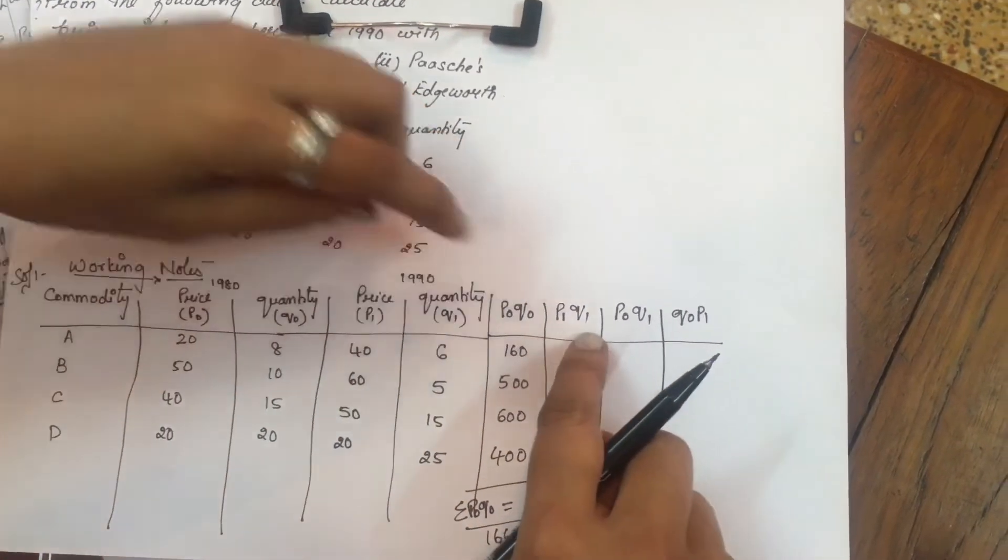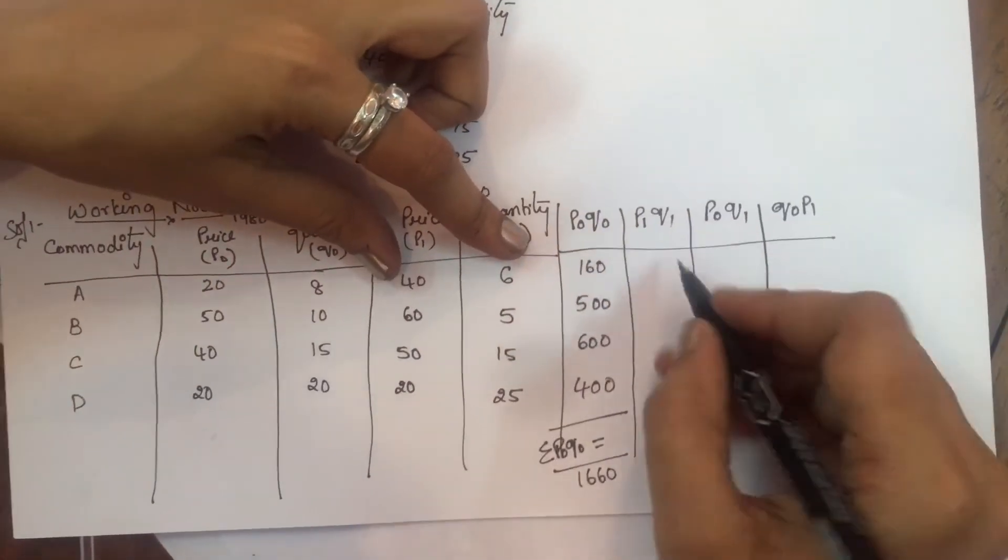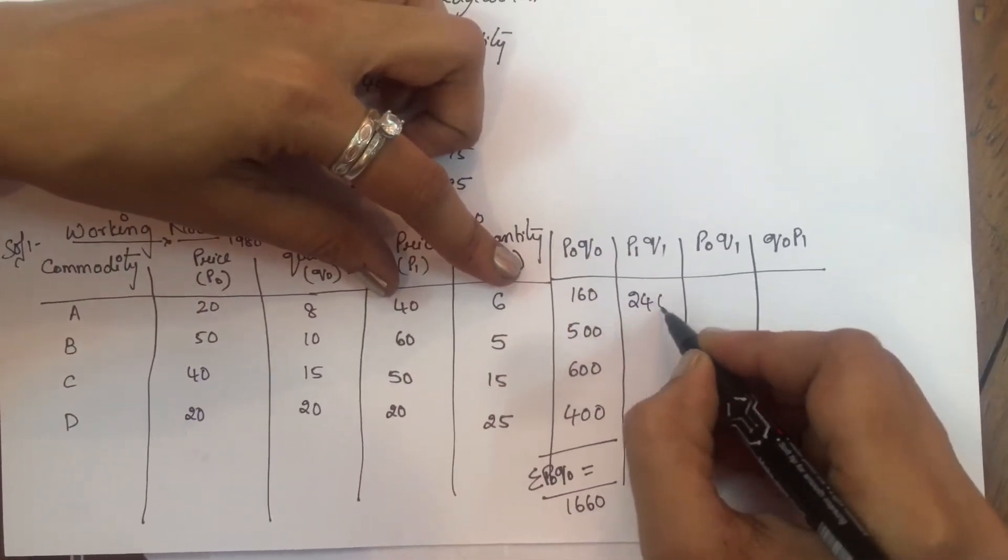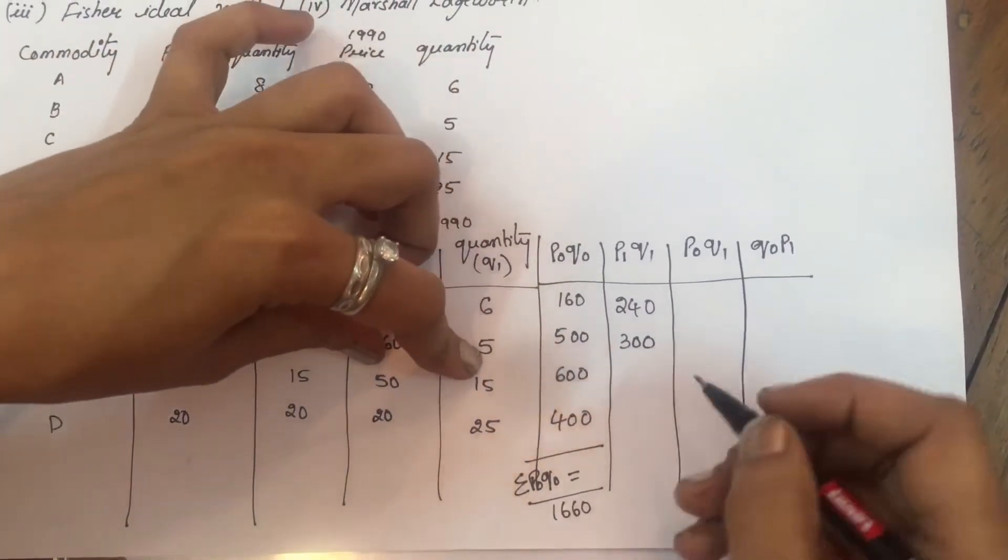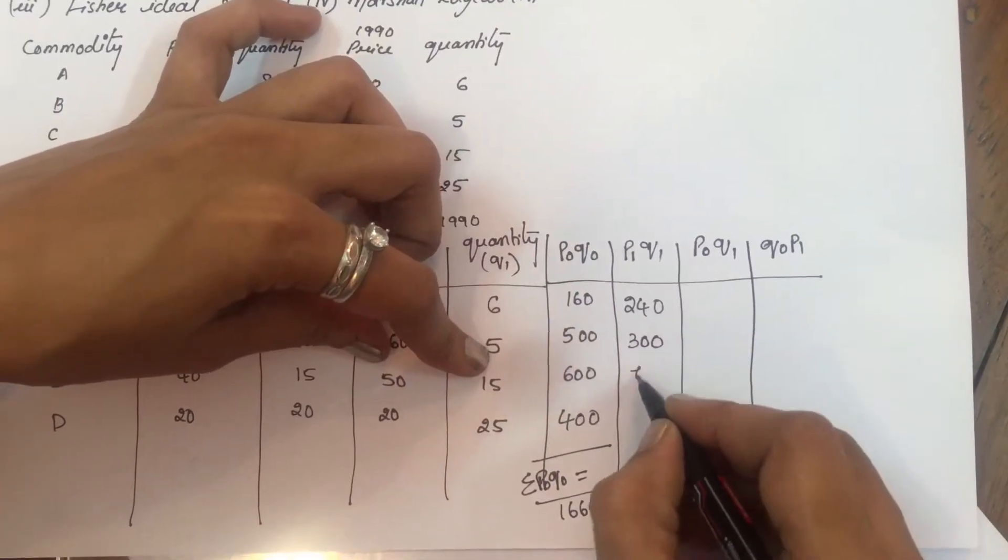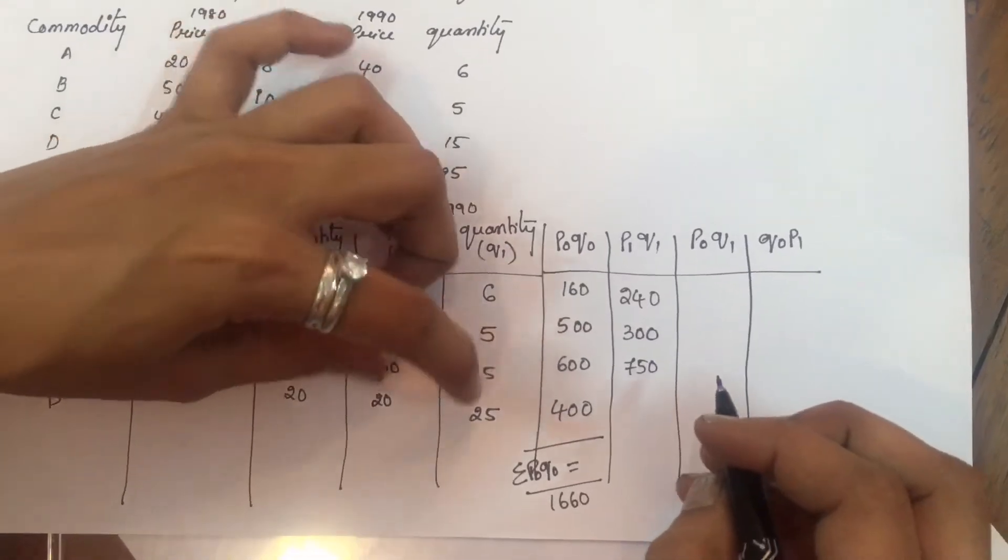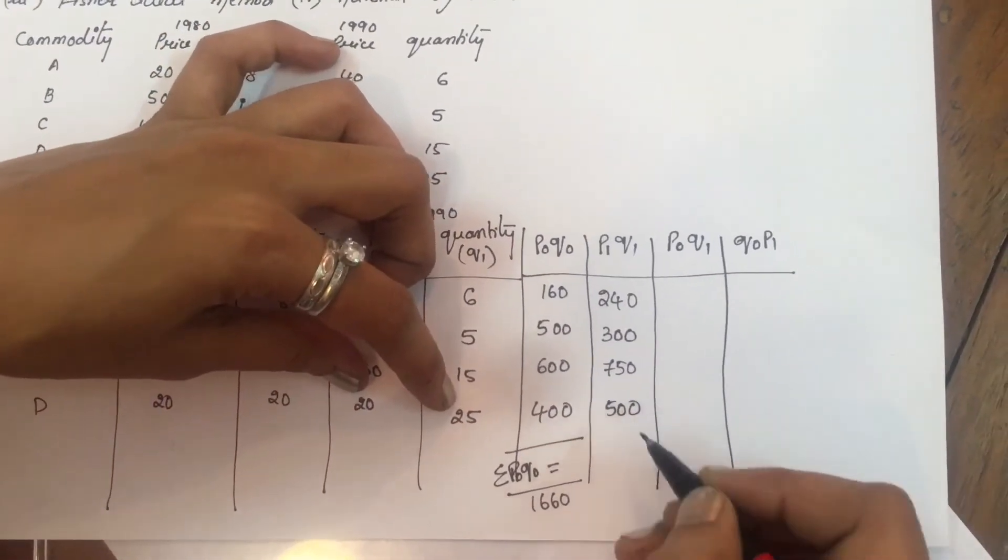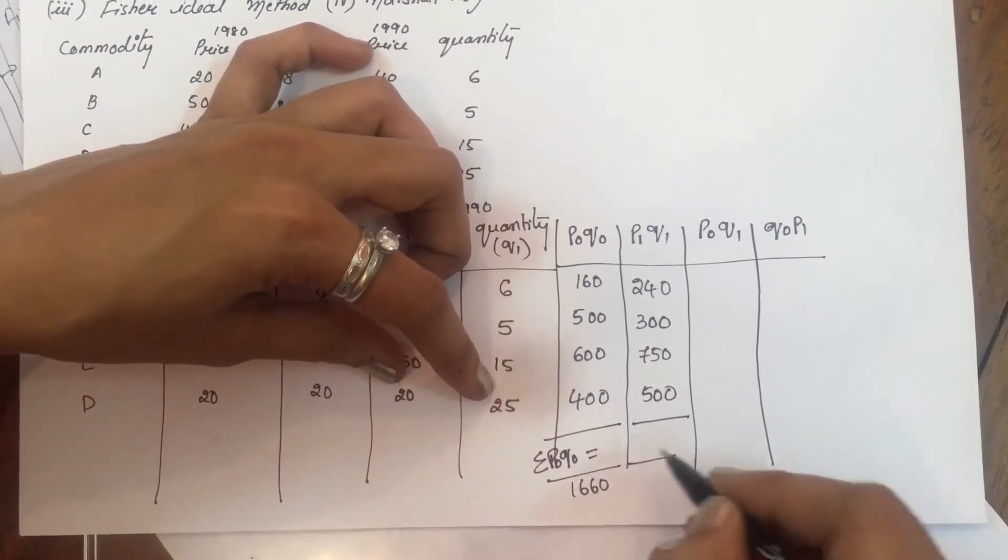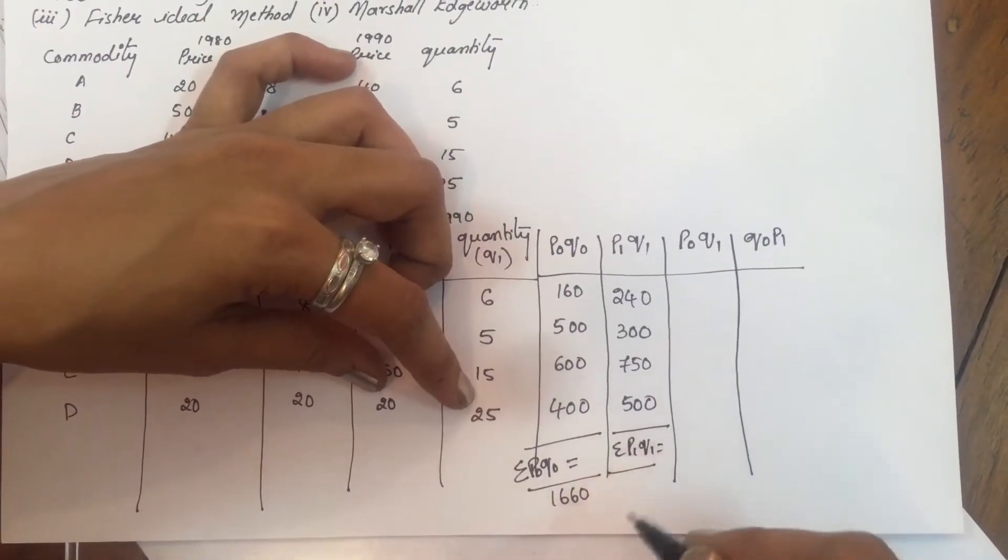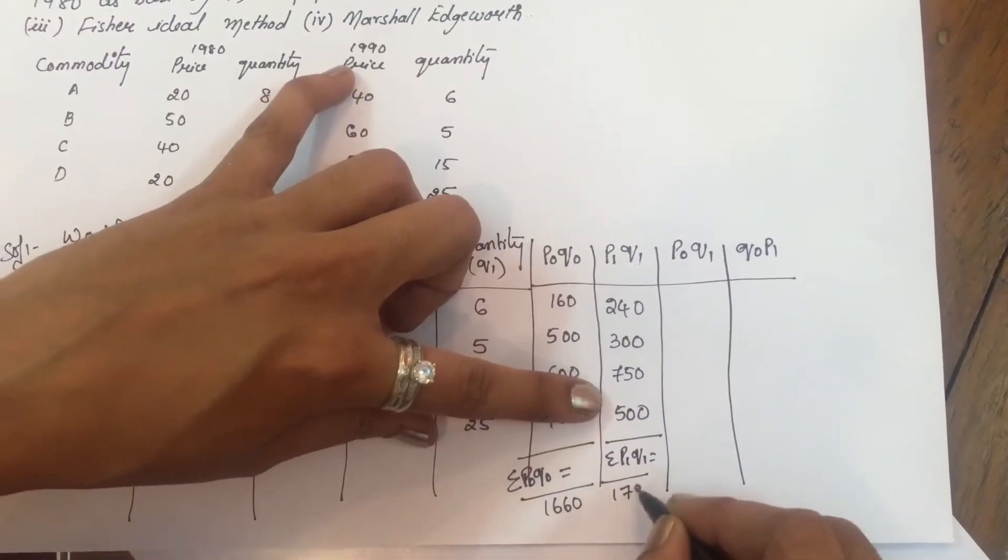Then P1 Q1. 40 into 6 is 240, 60 into 5 is 300, 50 into 15 is 750, 25 into 20 is 500. Add all this, Sigma P1 Q1 equal to 1790.